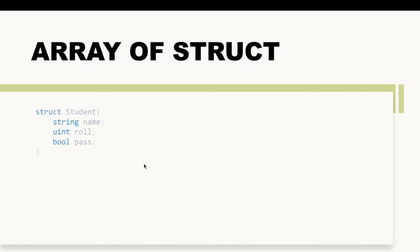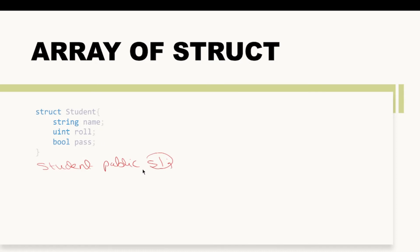In this video we are going to see how we can create an array of structures. In the last video we saw how to create structures in Solidity, and in that example we created a Student type struct. In order to use this struct, we created a variable of Student type like this, writing Student, then public, then s1. By this we were able to create the s1 variable which was able to store the value of a single student.